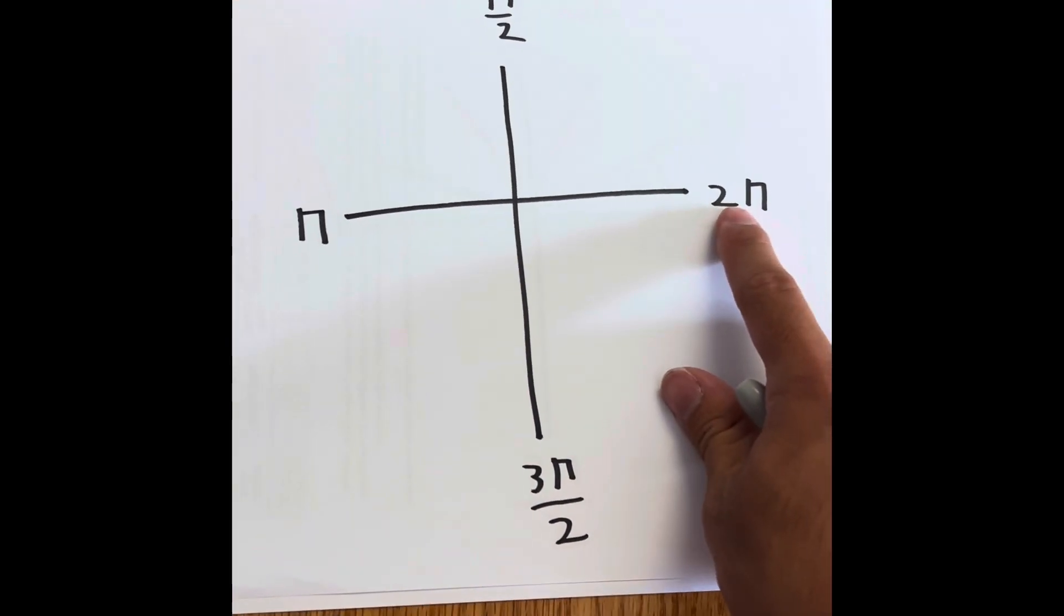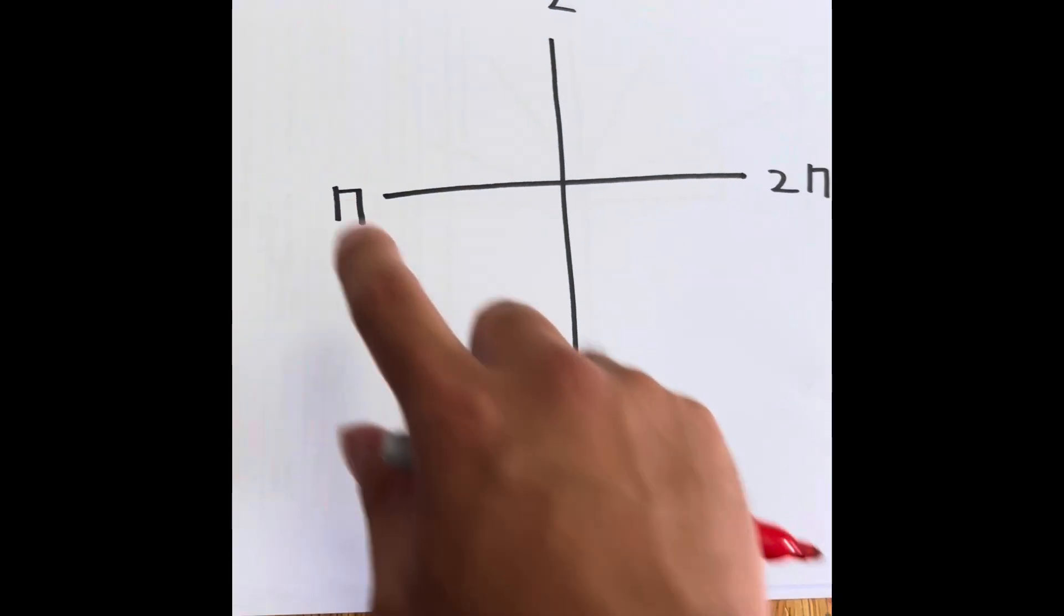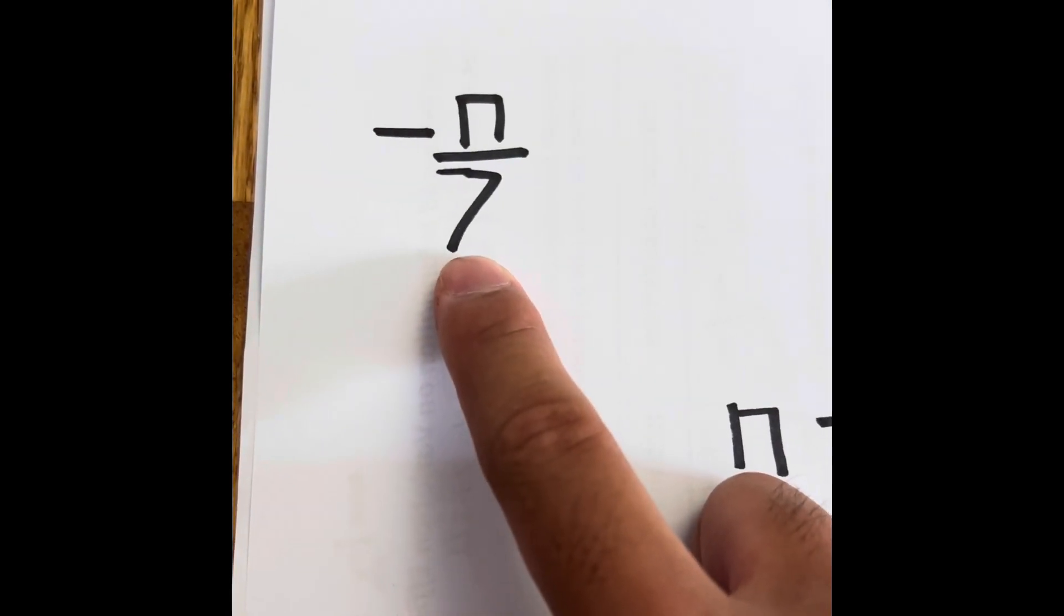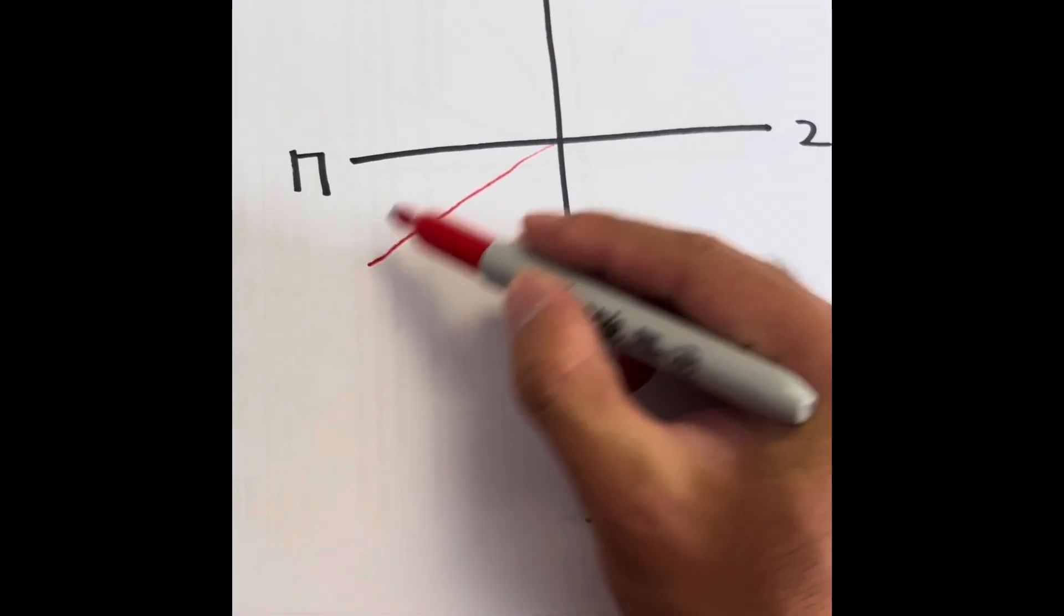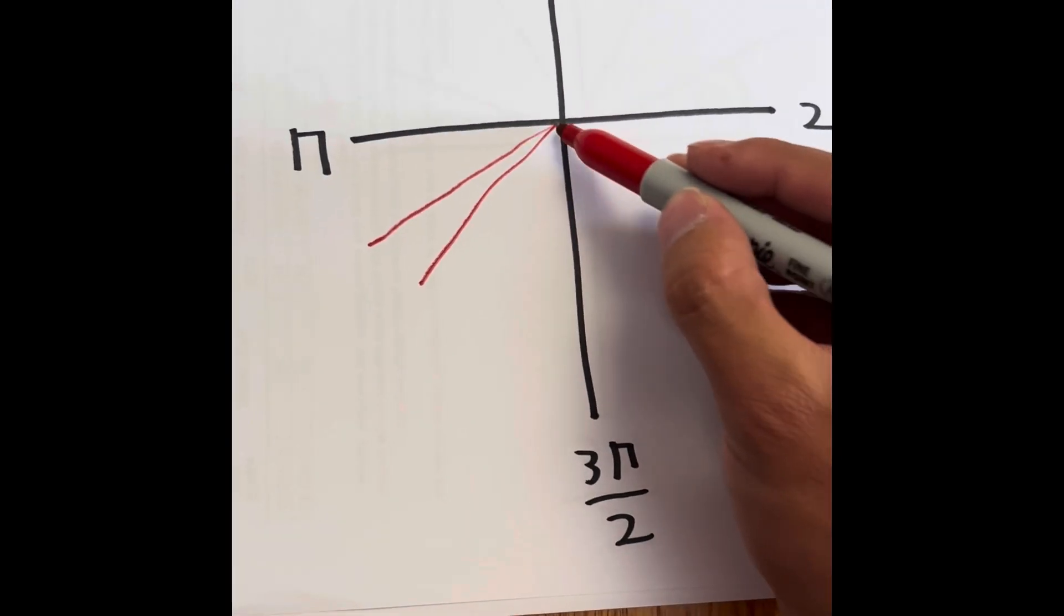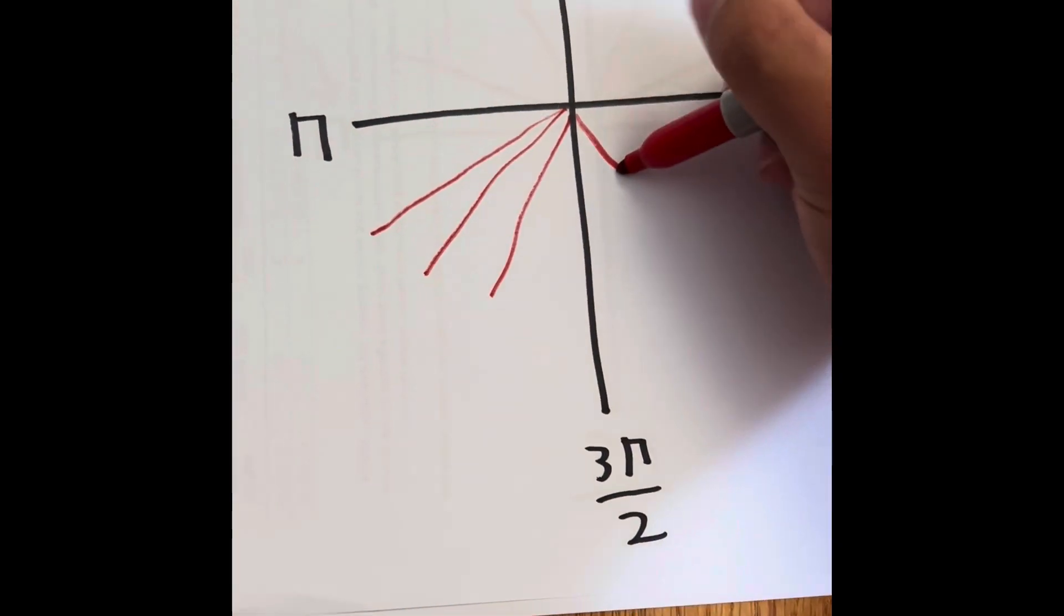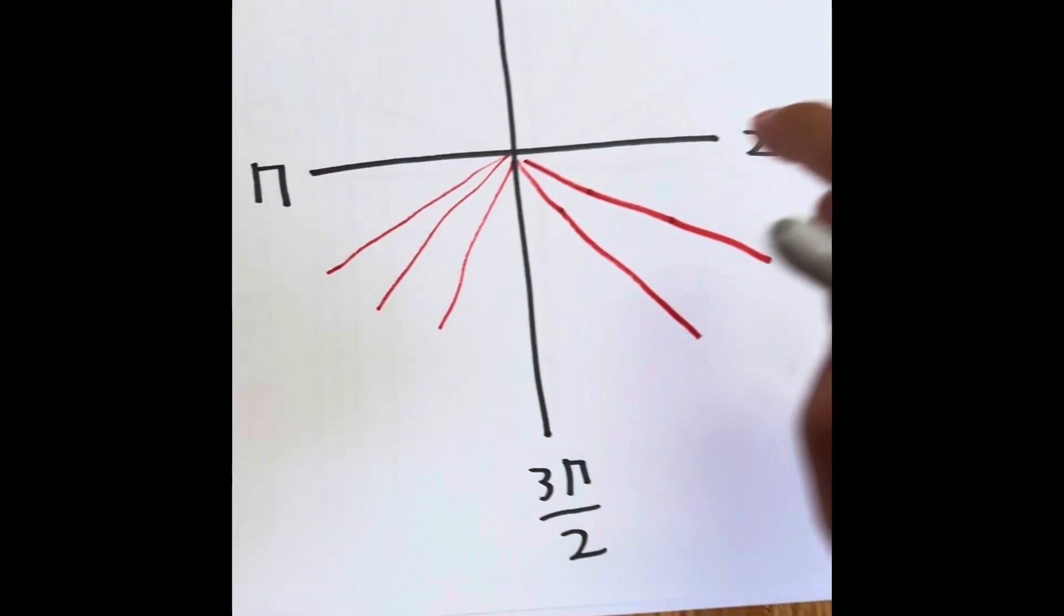So going from 2π all the way to π, since there are 7, we have to do it 7 times in terms of slices. So 1, 2, 3, 4, 5, 6, 7.